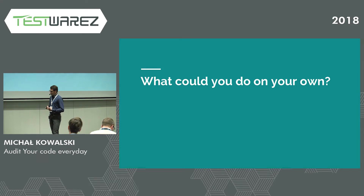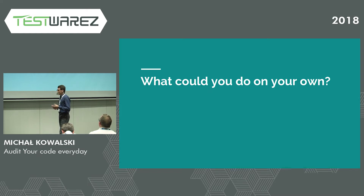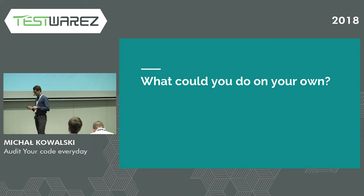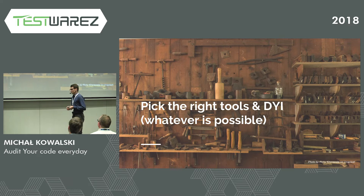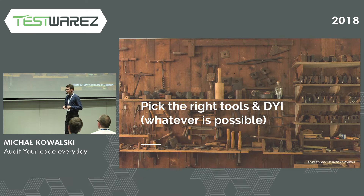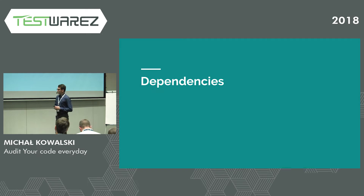So the question — and the topic of today's presentation — is: what could you do in your project to improve the situation? You probably won't hire a team of pen testers or have dedicated people doing audits all the time. But you could improve something. My suggestion is: pick the right tools and do it yourself. Integrate them with the process you already have, with all the quality standards your project is already following. I want to cover some parts of the audit onion, starting from dependencies.